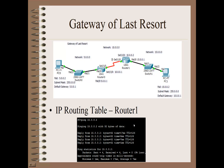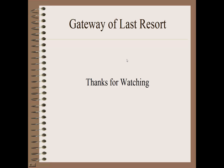Now if we ping from PC0 to PC1's IP address 15.0.0.2, our ping is successful - all four pings are received and returned, giving us 100%. That's pretty much it for gateway of last resort. We set it with all zeros and it acts just like a default gateway, allowing all traffic to move from one router to the other. Thank you for watching.